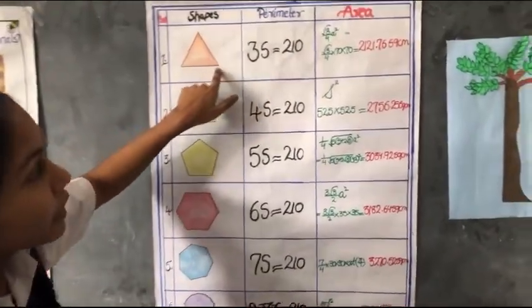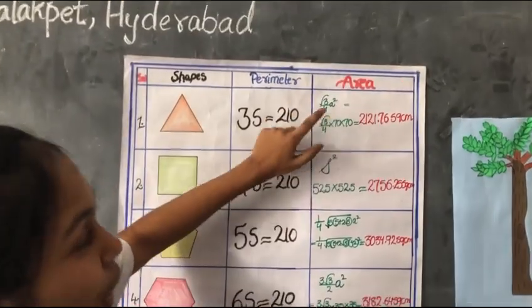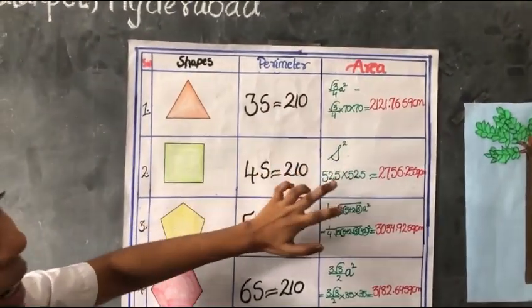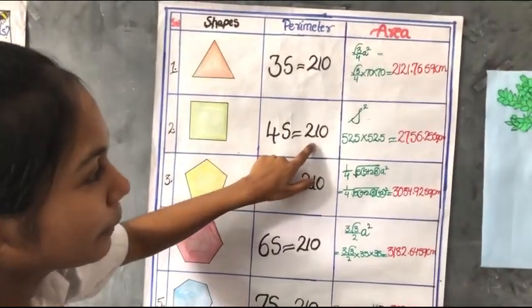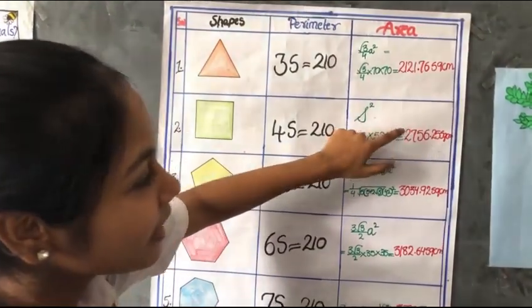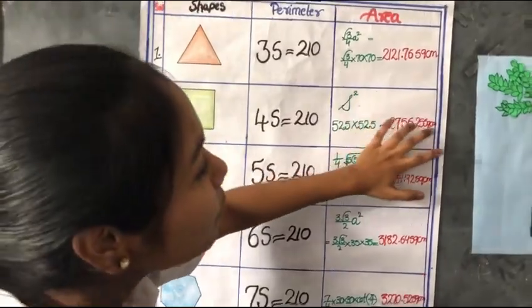When we calculate the area of a triangle, the area is 2121.76 square centimeters. For a square with the same perimeter, the area is 2756.25 square centimeters.